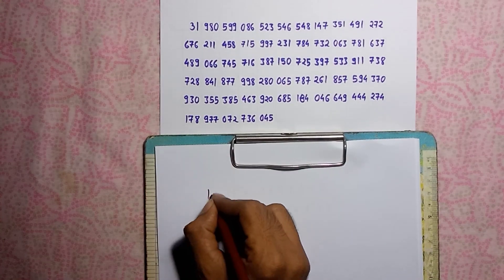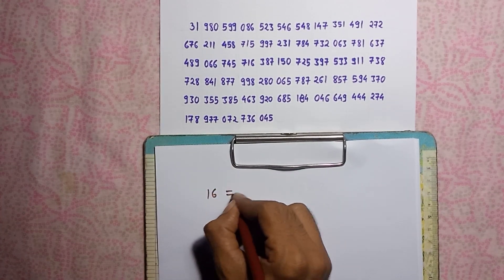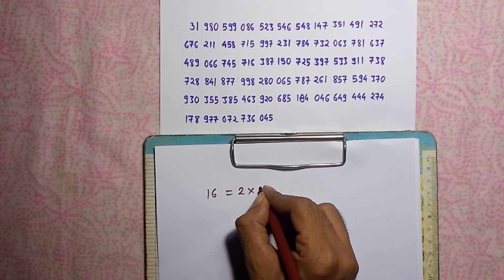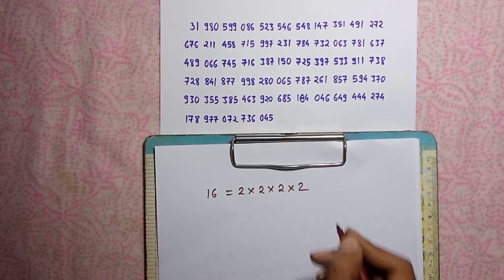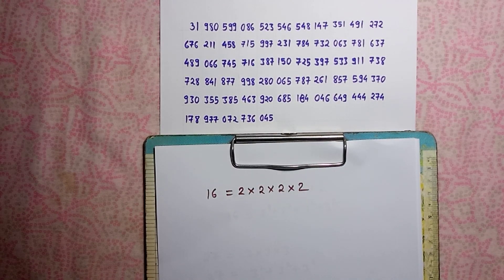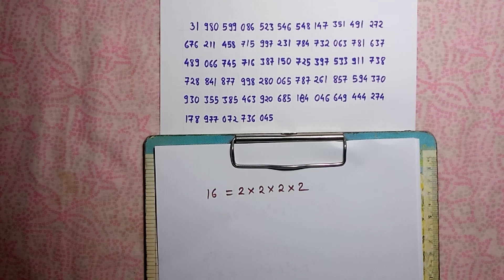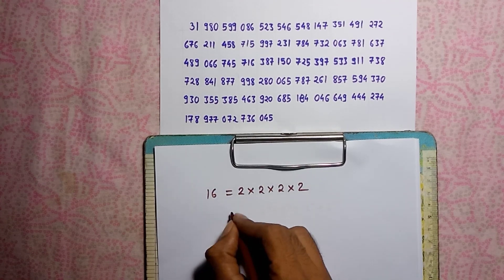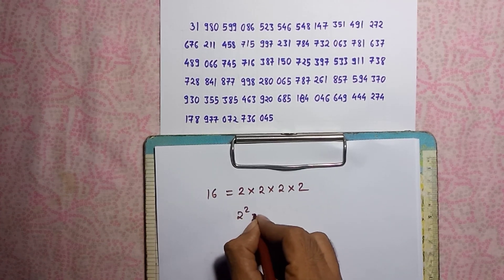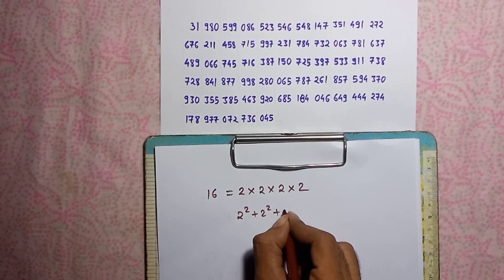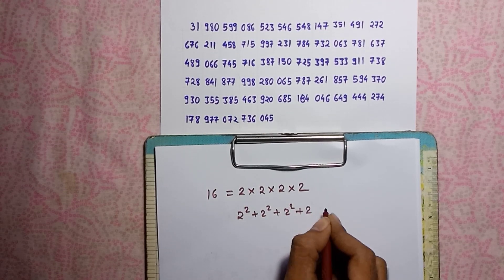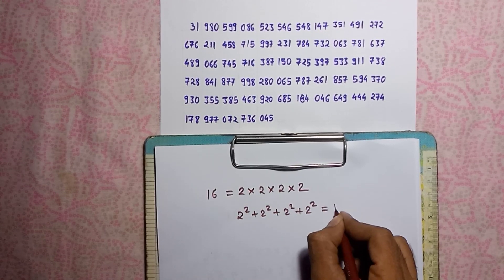16 is equal to 2 × 2 × 2 × 2. We can observe the sum of squares of prime factors of 16 is 2² + 2² + 2² + 2² is again equal to 16.